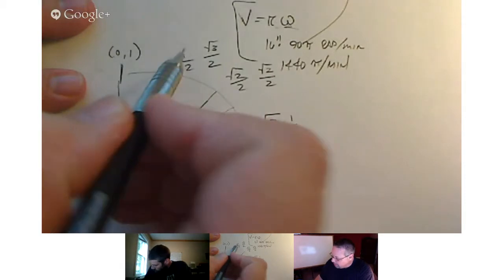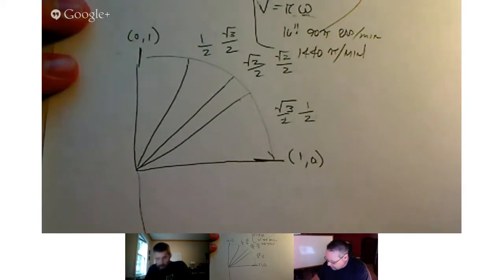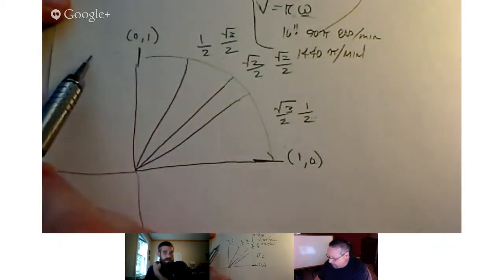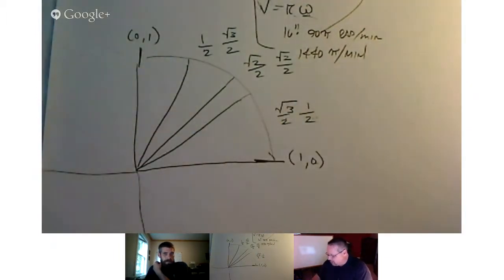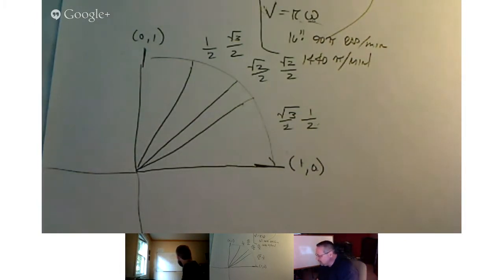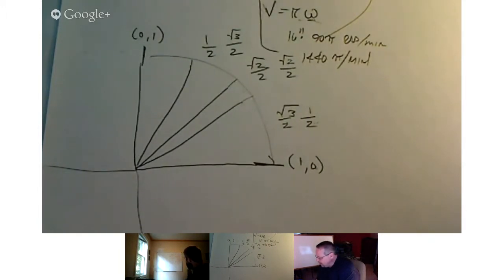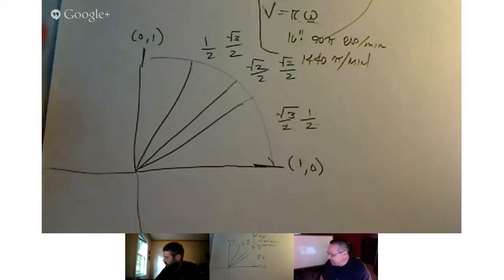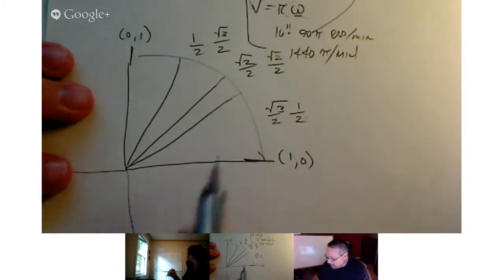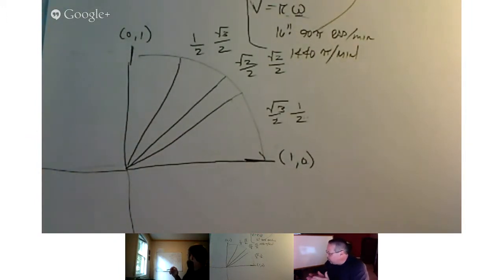So as long as you know those values there, you can fill the others in because all you do is fold it across the axis. So this right here would come over and it would just be negative 1/2, sqrt(3)/2, and negative sqrt(2)/2, sqrt(2)/2. It just depends on which quadrant as to how you apply the signs. You do the exact same thing when you flip it over the x-axis to get to the bottom ones — the exact same values all the way around.